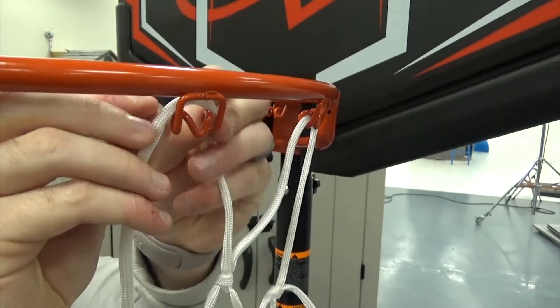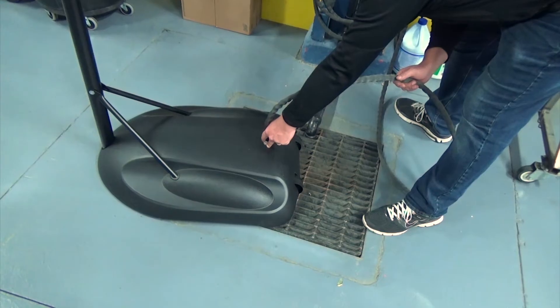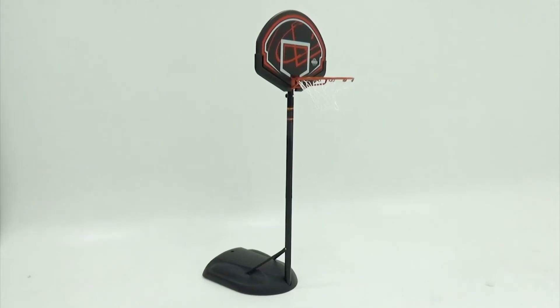All that's left is to attach the net, and you're done. Make sure to fill the base properly, and your youth basketball system is ready for play.